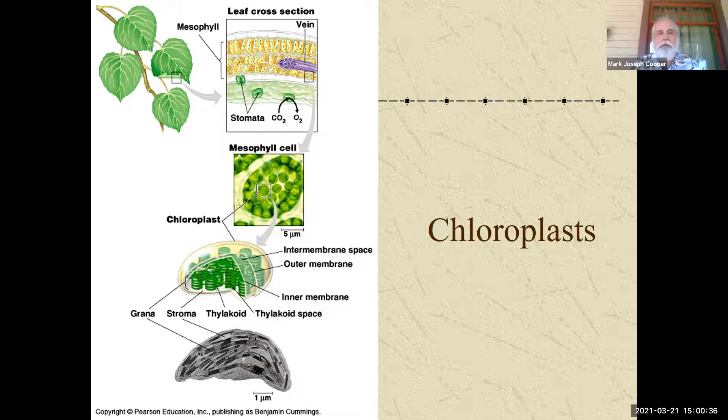And then we talked about thylakoids, so these round discs, and that's where the light reaction of photosynthesis occurs. And they also have a space inside them. So there will be a thylakoid space. A stack of thylakoids is called the grana. And then the area around the thylakoids within the chloroplast is called the stroma. So make sure you remember those parts.